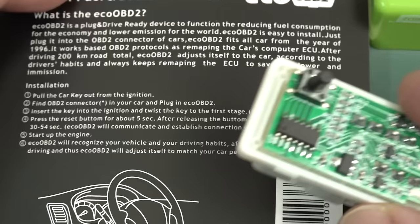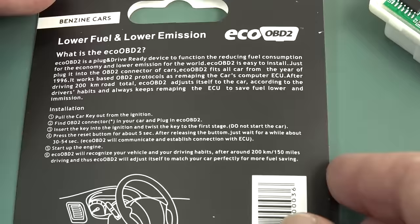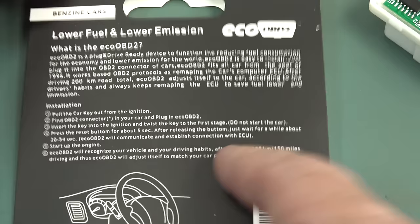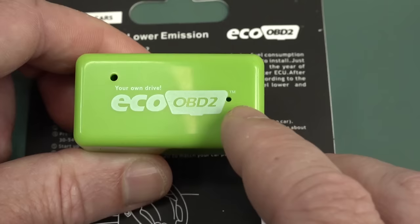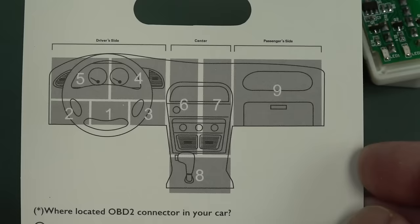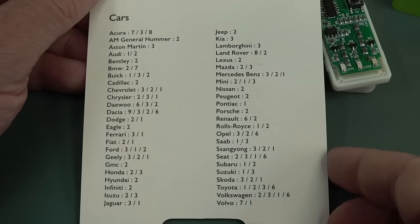The instructions are really quite vague. It just says press the reset button for five seconds after plugging in. Release the button. Just wait for a short while. It'll communicate an established connection. But it doesn't actually tell you that the button's actually hidden inside here, behind here. And there's one little hole for the LED. But it's actually got three LEDs in there. There's no other details in here apart from how to find your OBD2 connector.